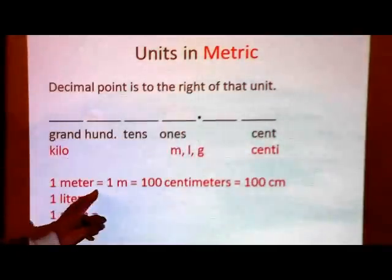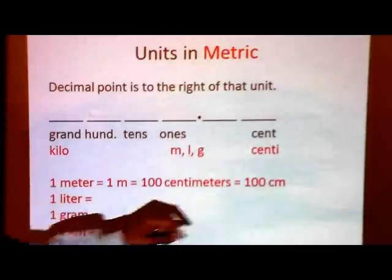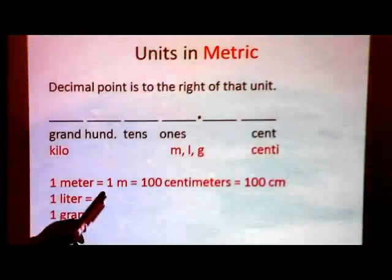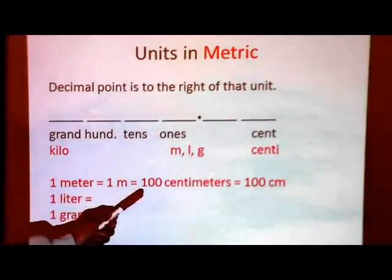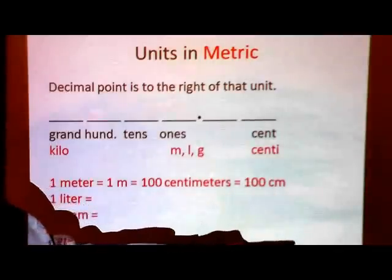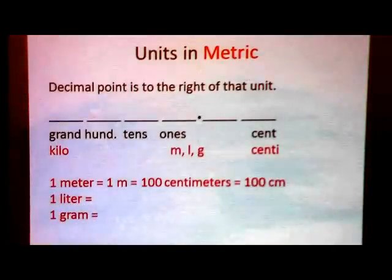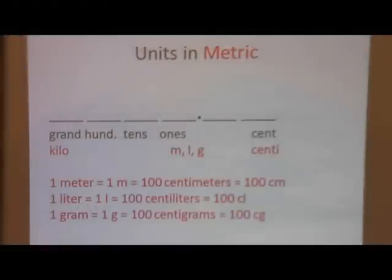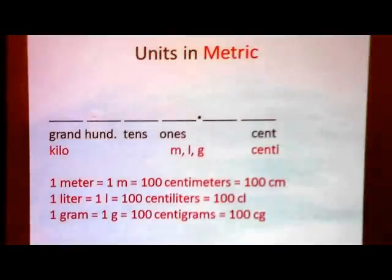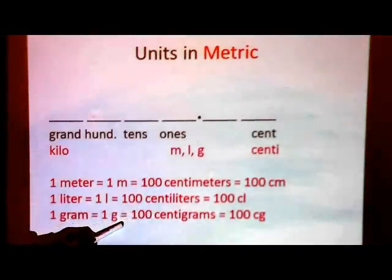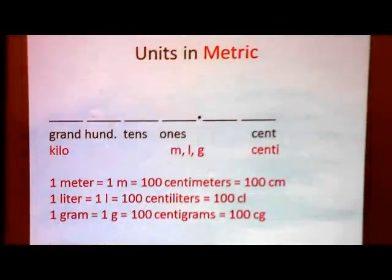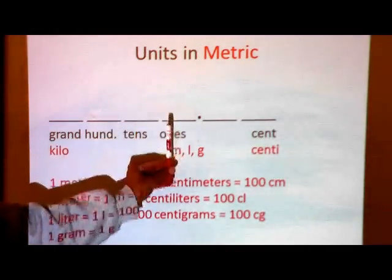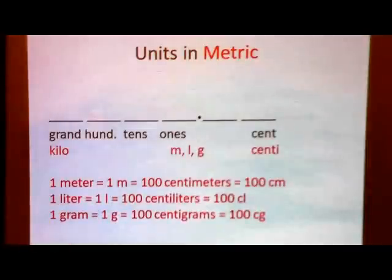As I said, the metric equivalent of this column is centi. The same relationship holds: one meter equals a hundred centimeters — one M equals 100 cm. I want you to pause the tape and do this on your own using the six steps for liters and grams. Hopefully you came up with the same answer — a hundred — because we're starting with this column and ending up in the centi column. The answer is the same regardless of whether you use liters or grams.